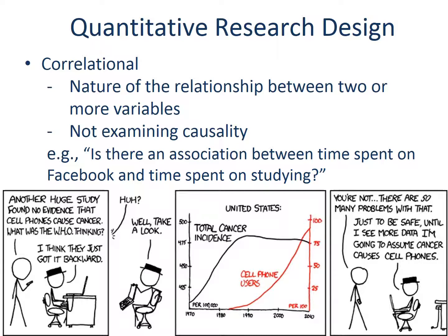You will employ a correlational research design if you want to explain the nature of the relationship between two or more variables. You have to be careful that correlation or association doesn't necessarily translate to causality. For example, the incidence of total cancer increased while the number of cell phone users increased. The two seem to increase together, but this only shows association — as one factor increases, the other tends to increase too. We do not know if increased cell phone use caused cancer, unless we can exclude all other possible factors related to both.